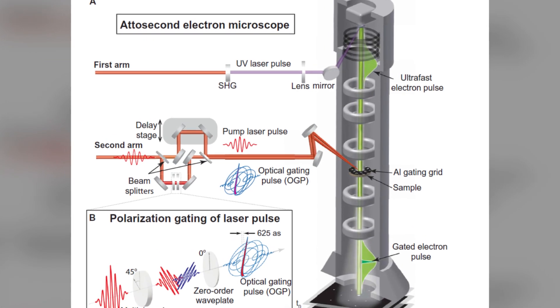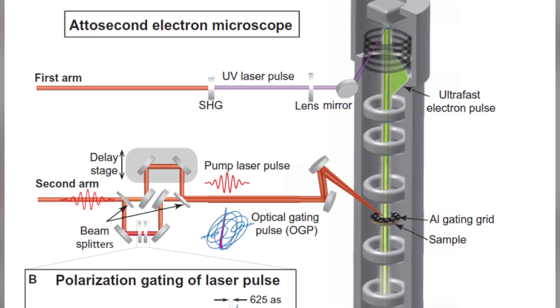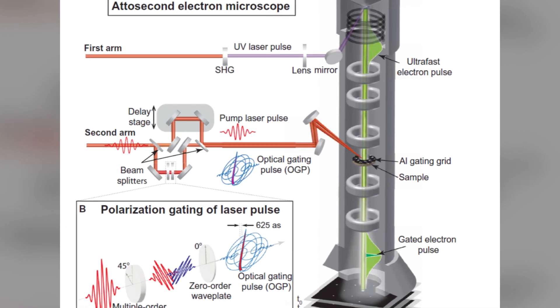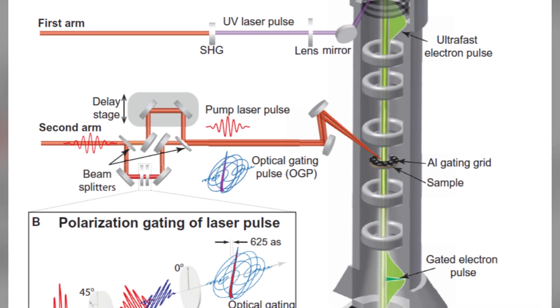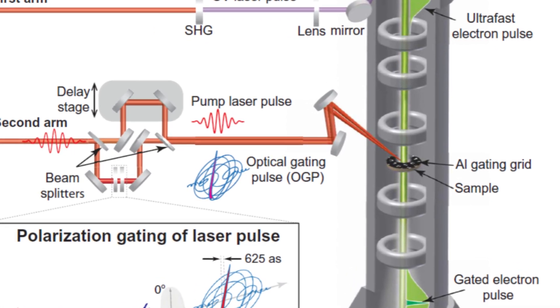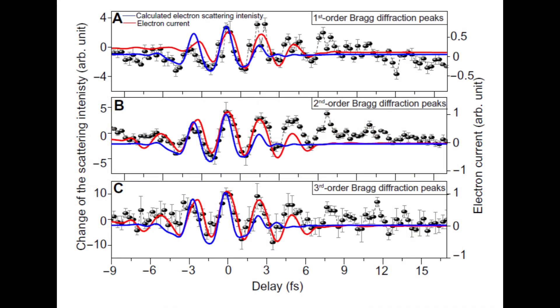The first EM pulse, known as the pump pulse, injects energy into the sample, causing the electrons to move. The second EM pulse, called the gating pulse, creates a brief window or gate during which the attosecond electron pulse is fired at the sample, capturing the ultrafast processes at play. This synchronization allows scientists to observe the behavior of electrons with unprecedented precision.